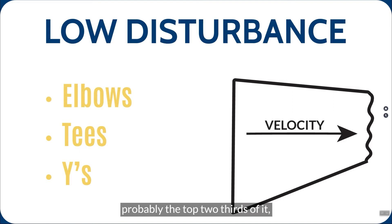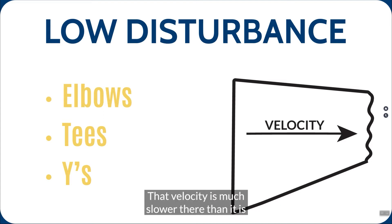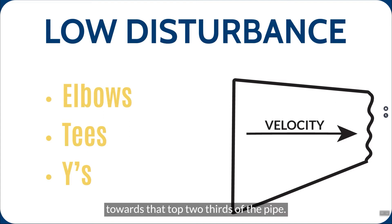The top portion of this, in this case, probably the top two-thirds of it, the velocity is the same. But as you get towards the bottom of the pipe, it's a slowing of velocity. That velocity is much slower there than it is towards that top two-thirds of the pipe. That's a low disturbance.